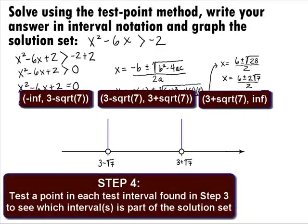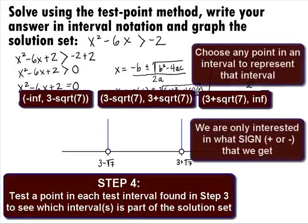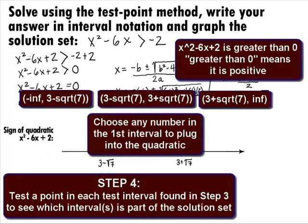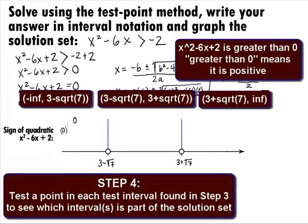In Step 4, we want to test a point in each test interval found in Step 3 to see which interval or intervals are part of the solution set. We can choose any point in an interval to represent that interval, and plug it into the quadratic in standard form to see if the sign is positive or negative. Keep in mind that the original inequality in standard form is x squared minus 6x plus 2 is greater than 0, so the quadratic has to be positive. Let's choose 0 from the first interval, negative infinity to 3 minus square root of 7. Plugging in 0, we get 0 squared minus 6 times 0 plus 2, which equals 2. Since we got a positive number and we are looking for a positive, this interval is part of the solution.